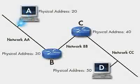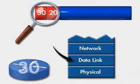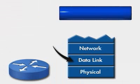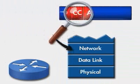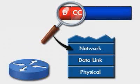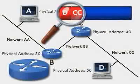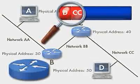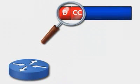The message travels on the wire to Router B. The router examines the data link destination address and recognizes that the message is addressed to it. The router strips off the data link addresses and examines the destination address at the network layer. It recognizes that the destination device is on a network to which it is not attached and decides that Router C is the next router in the path.